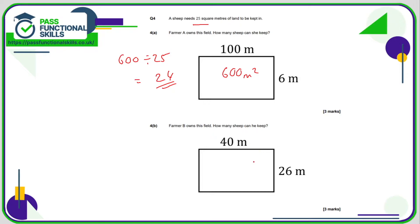Farmer B's plot is 40 multiplied by 26, which is 1,040 square meters. So how many 25s can we fit in there? 41.6. So farmer B can keep 41.6 sheep. But that's a ridiculous answer, isn't it?